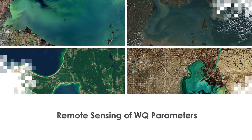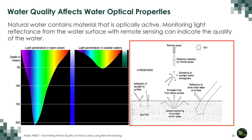Now we'll have a brief review of remote sensing of water quality parameters. Water quality affects water optical properties — the water color — and by looking at different wavelengths, one can infer water quality. Natural water contains optically active material, and monitoring light reflectance from the water surface with remote sensing can indicate the quality of water. The depth to which light penetrates depends on the optical properties of the water, varying between open ocean and coastal waters.